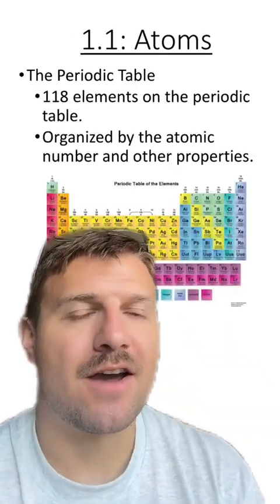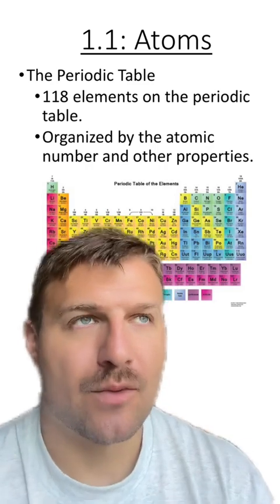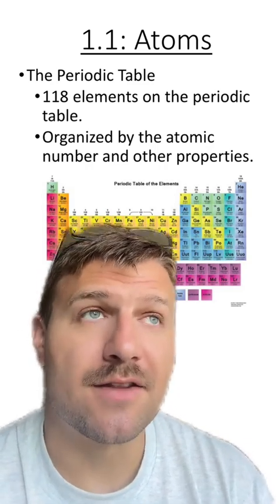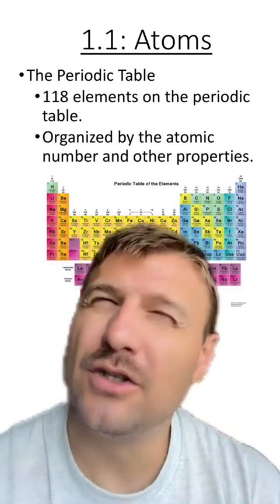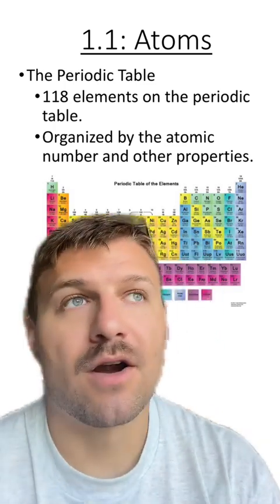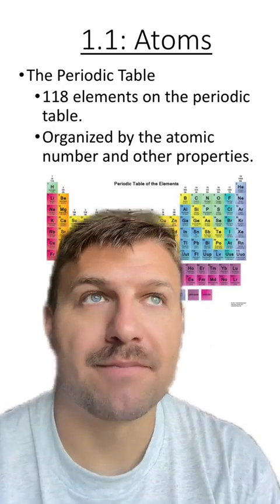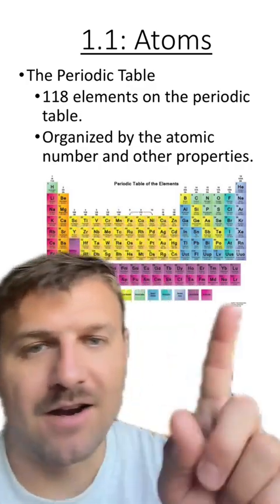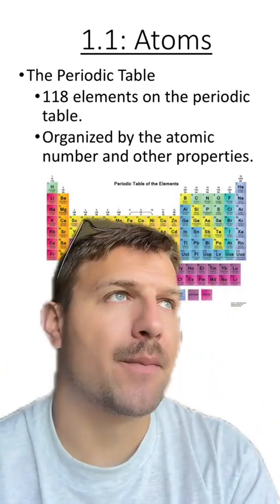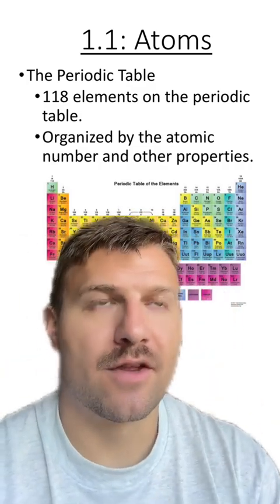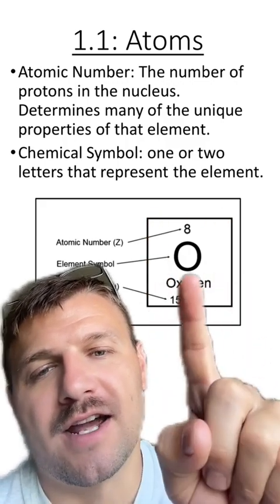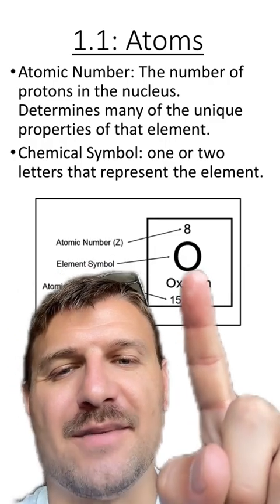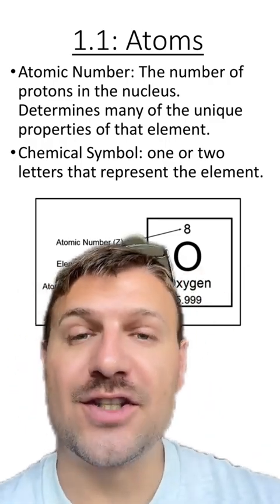These atoms and elements are found on something called the periodic table. Right now, there's 118 elements on the periodic table, and this is because we're kind of finding or inventing new elements now. These elements are organized on the periodic table by something called the atomic number. On the periodic table, you're going to see each one of these squares with an element inside. We have our element and then our element symbol. You can see that it's O for oxygen.